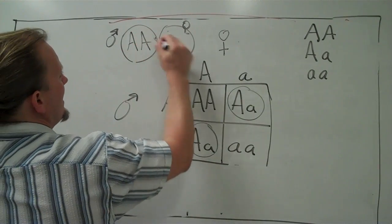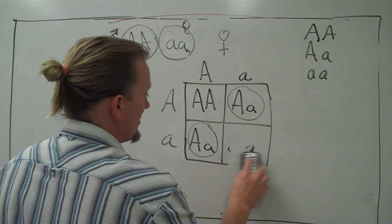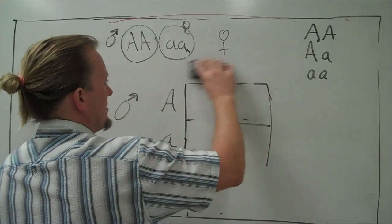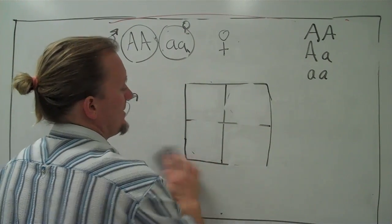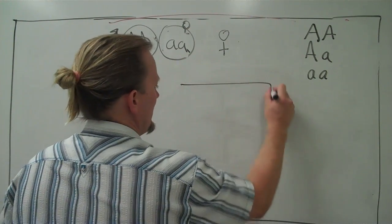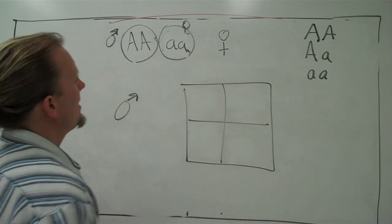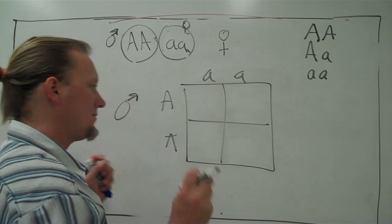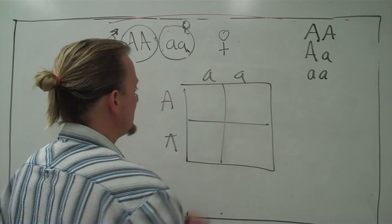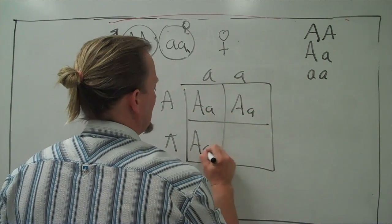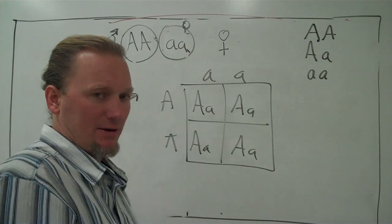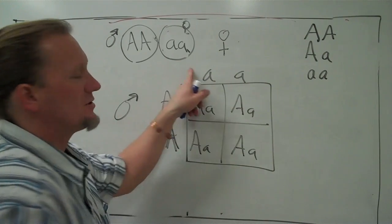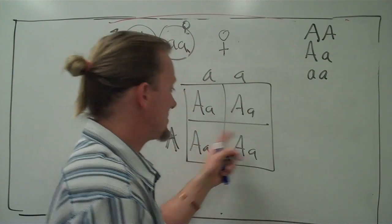What if someone gives you a different combination, like big A big A crossed with little a little a? Make another Punnett square. In this case the male is big A big A and the female is little a little a. Filling it in: every cell is big A little a. The only possible outcome is a heterozygote. So if one parent is homozygous dominant and the other is homozygous recessive, every offspring will be heterozygous — it has to be.